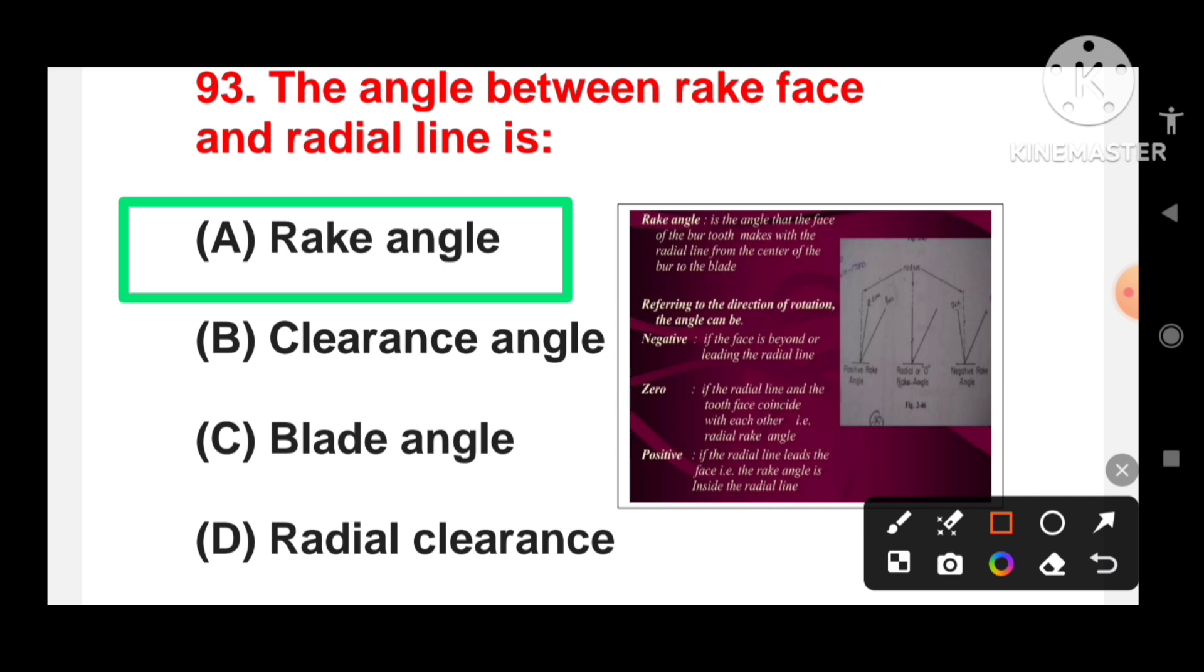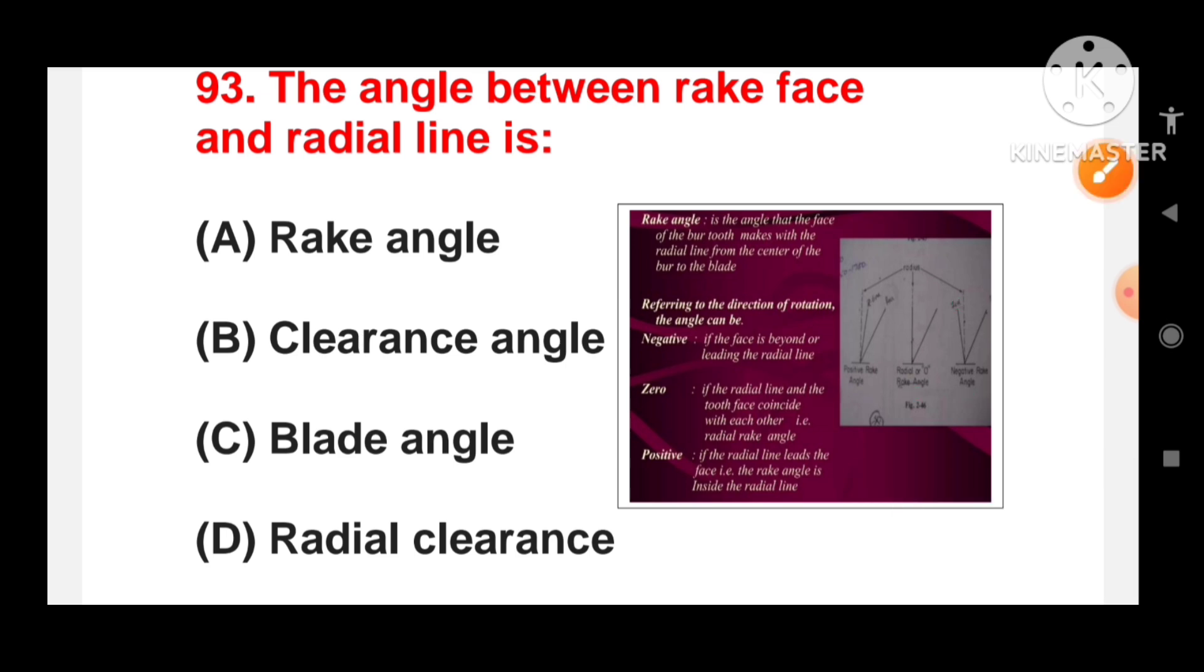It refers to the direction of rotation. The angle can be negative, zero or positive. If it is negative, it means the face is beyond the radial line as shown in this picture. Zero means the radial line and the tooth face coincide with each other. And positive means if the radial line leads to face, that is the rake angle is inside the radial line.